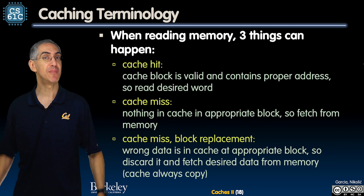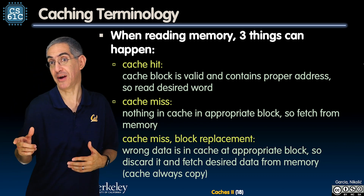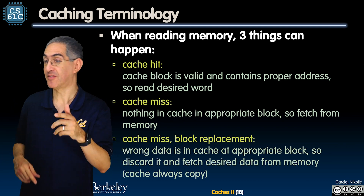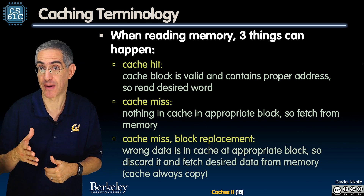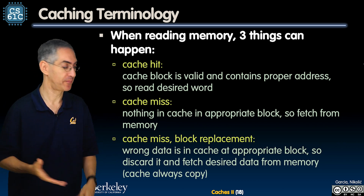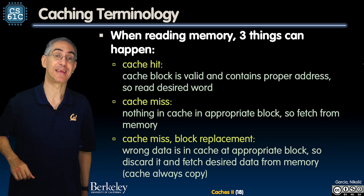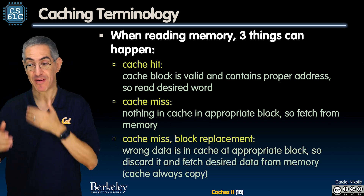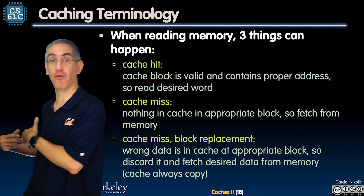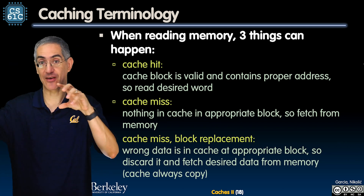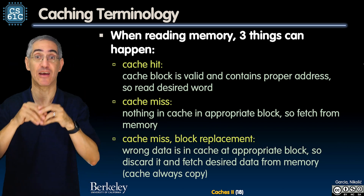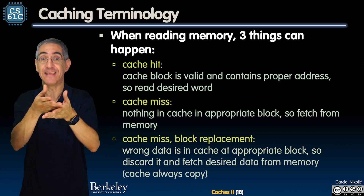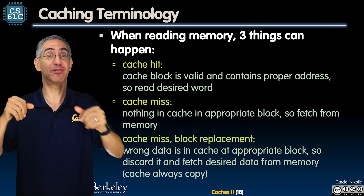When I read memory, sometimes it's there, sometimes it isn't, or sometimes it's there but the tags don't match. Those three cases we call a cache hit. That's the best situation. It means I loaded it before into the cache spot, into the cache block, and when I want some data, it's there. The tags match.